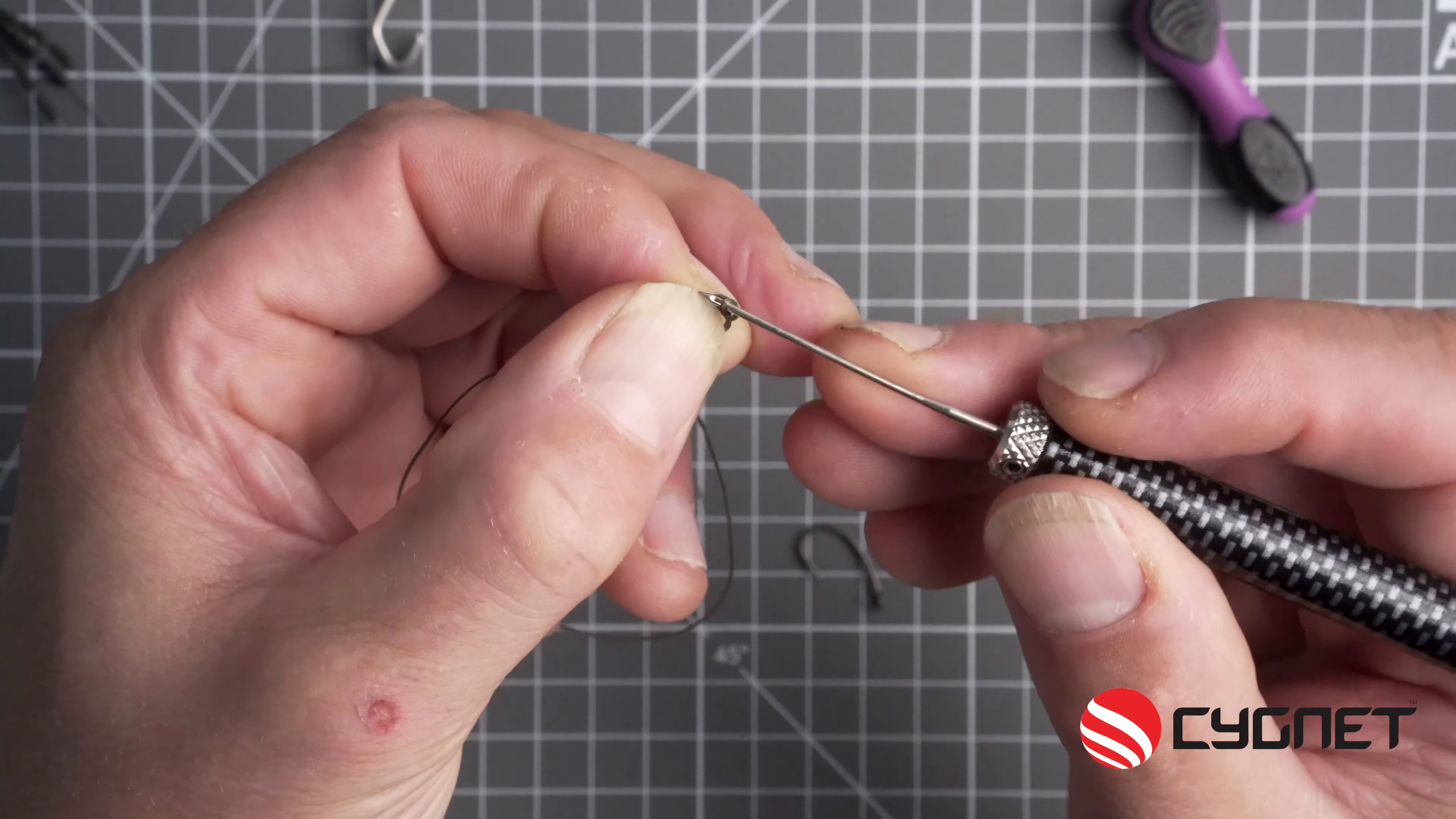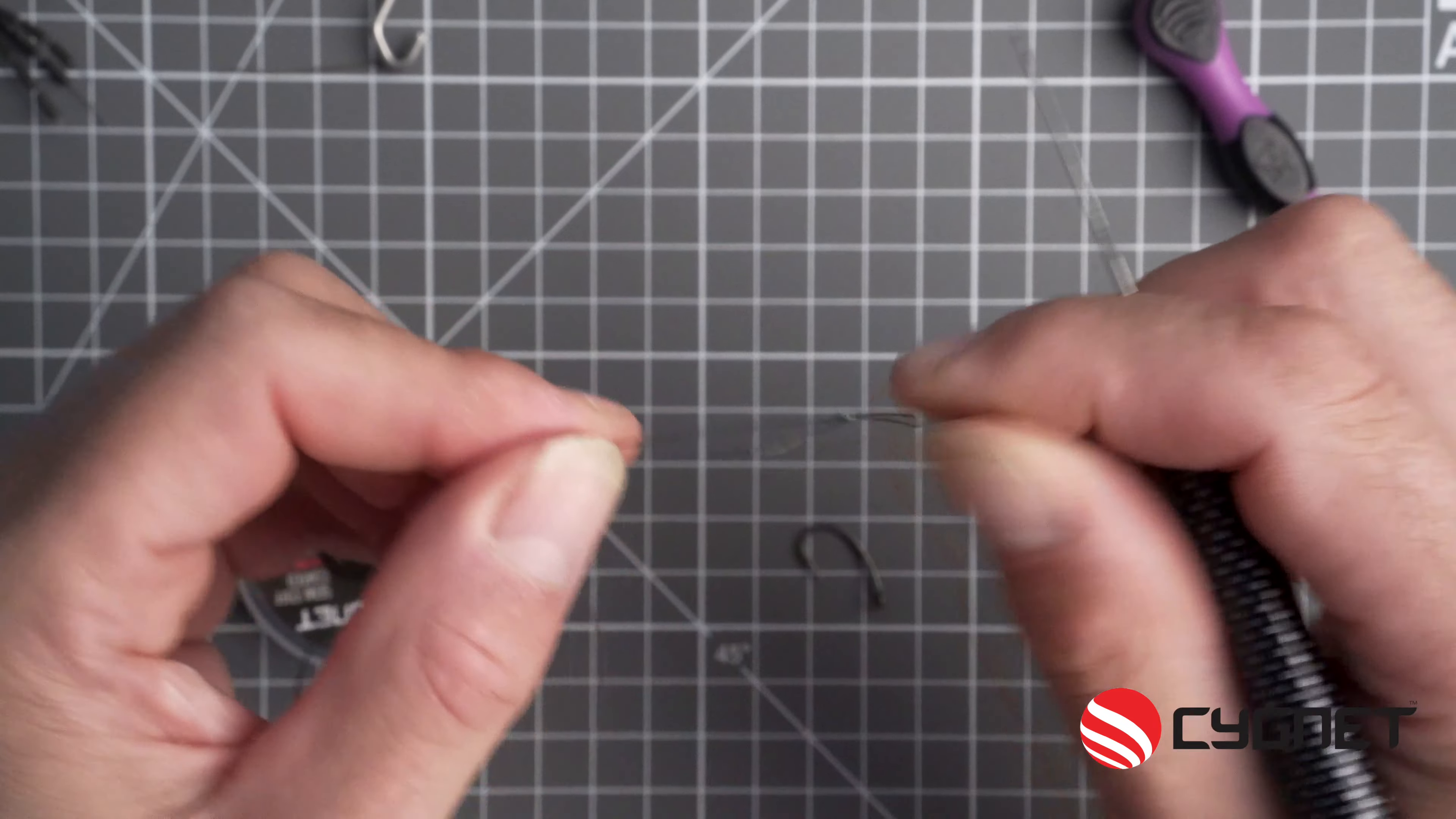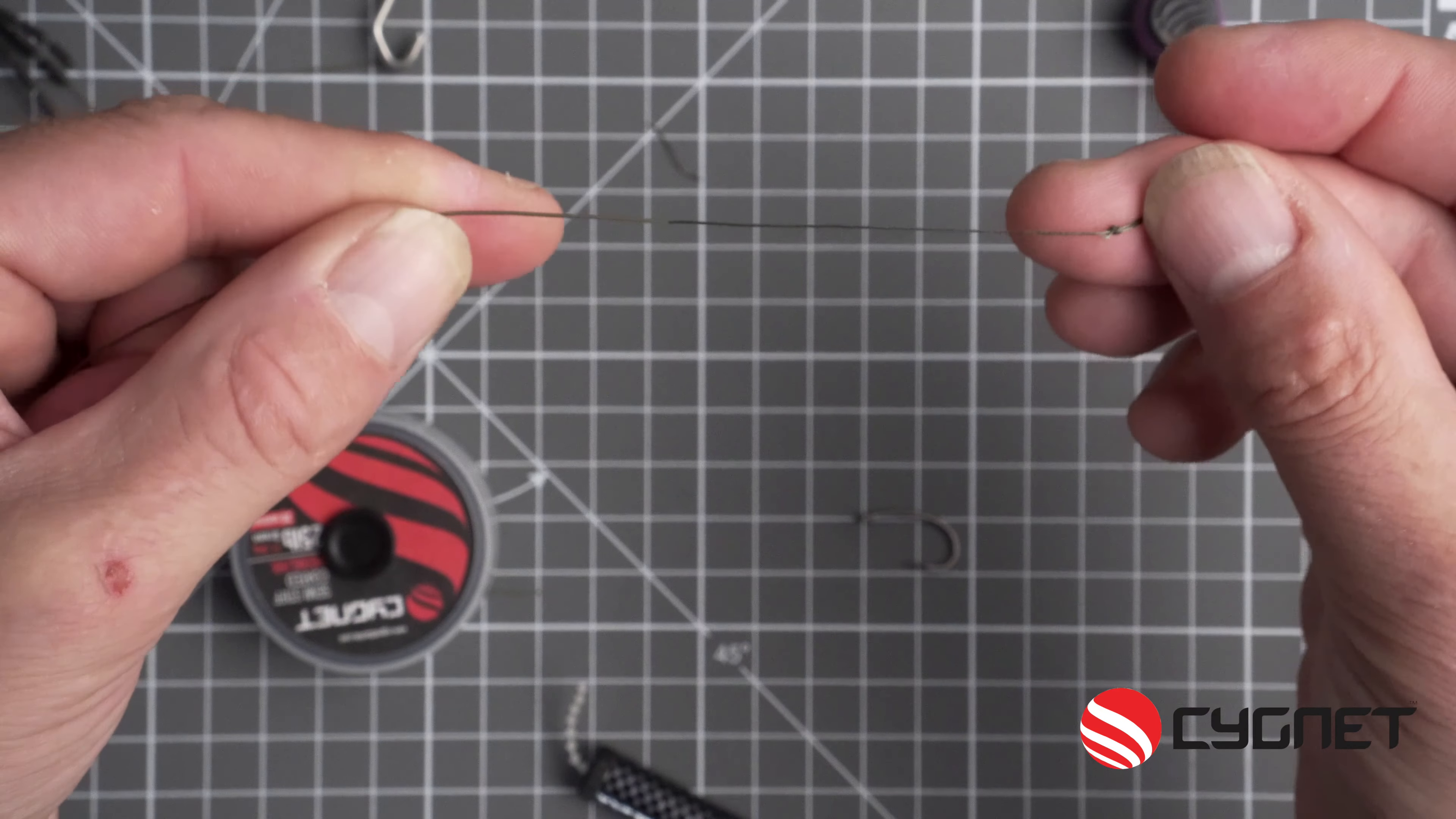Once you've revealed the braid underneath, you need to tie a little loop in the end. Now I use my baiting needle here just to tighten the knot and I'll trim the tag end with a sharp pair of scissors. Once that's done, I'm left with about three inches of exposed braid ready to tie the rig.